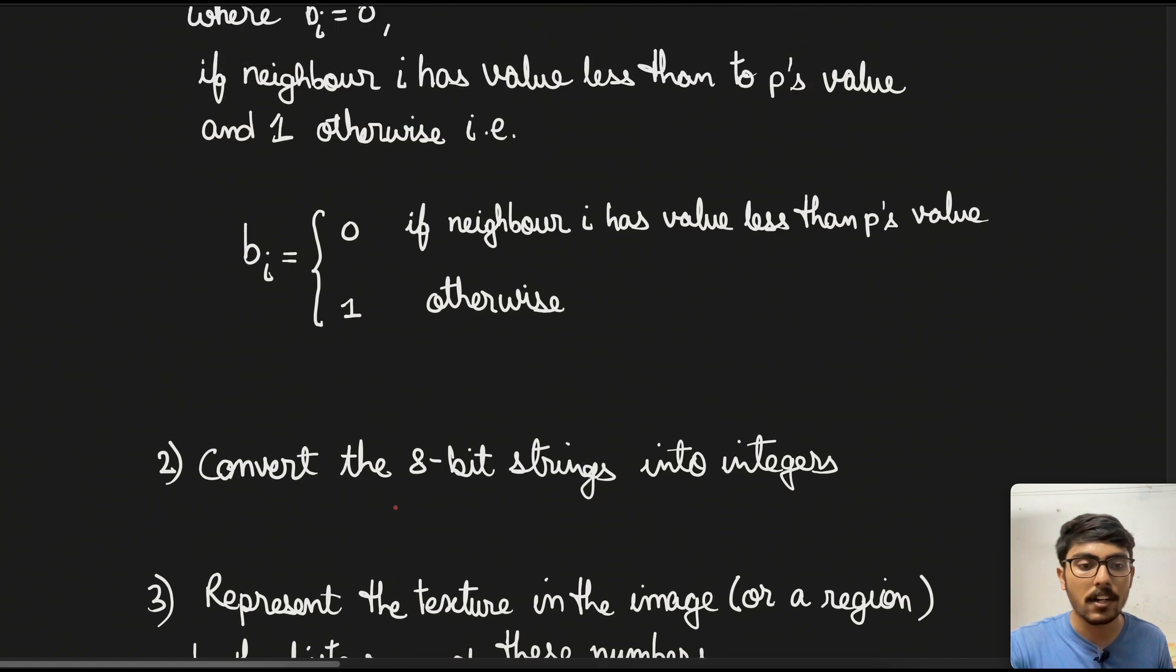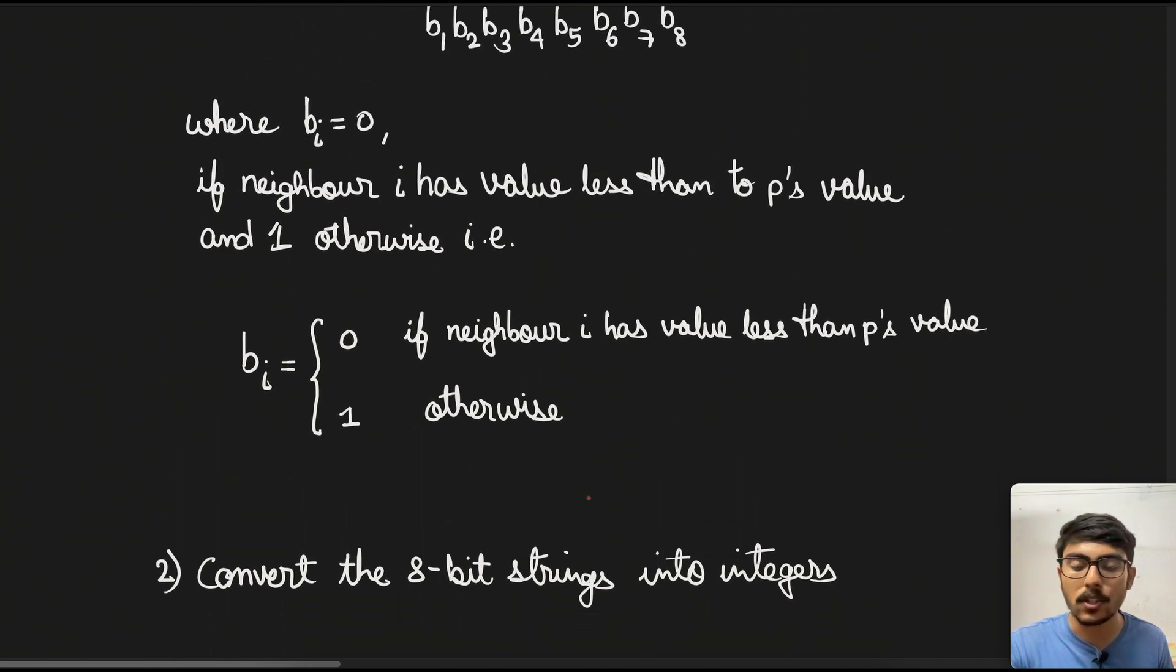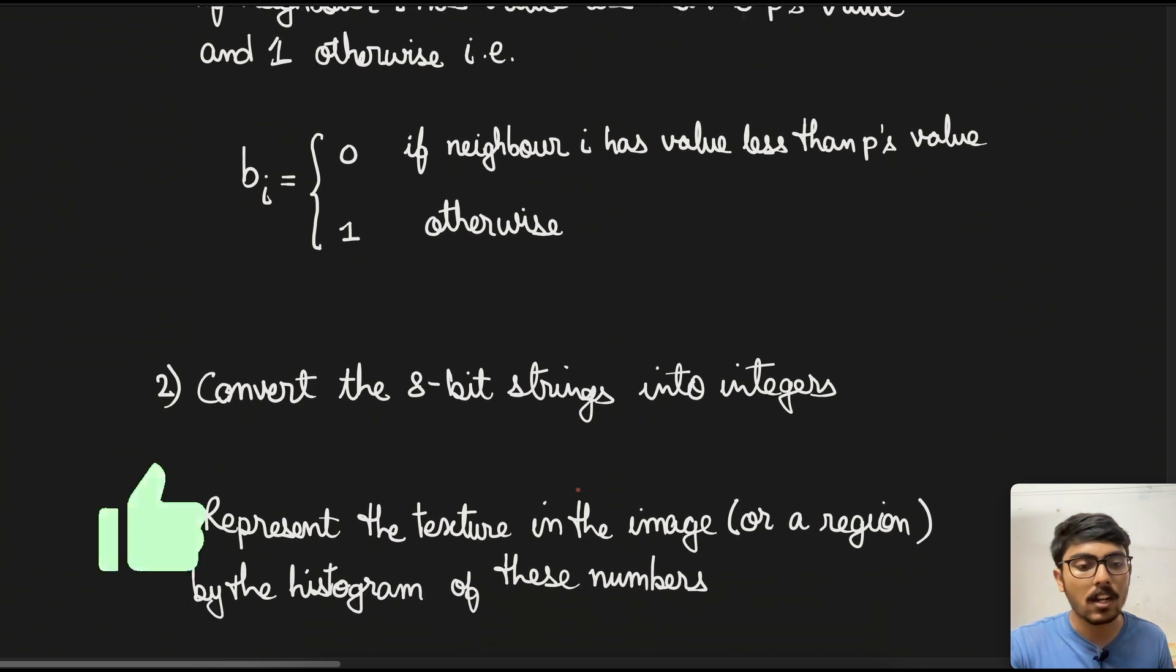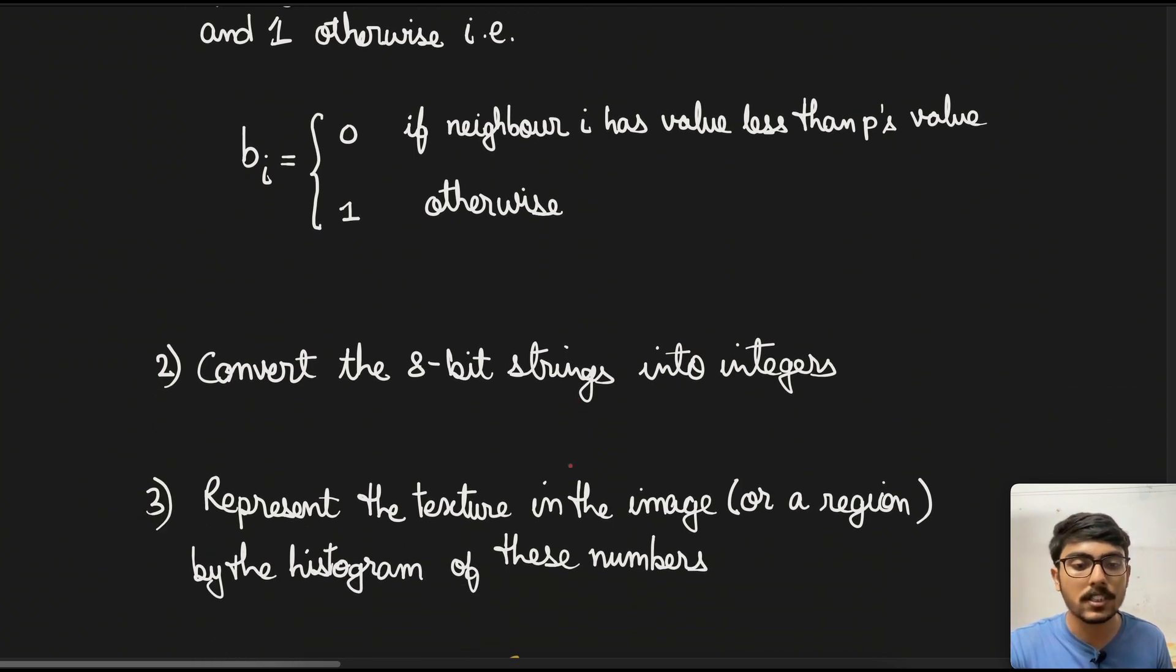Now we come to the second part, which is convert this 8-bit string into integers. Since the 8-bit string will come in binary format, we need to convert the binary into decimal so that we get the integer. The third step is represent the texture in the image or a region by histogram of these numbers.